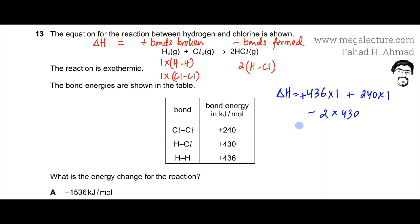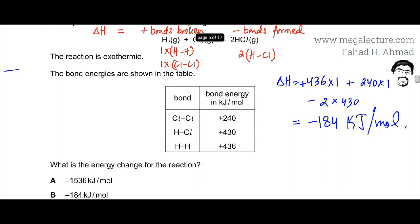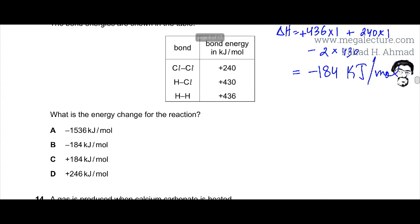Minus 184 kJ per mole is the answer. Looking at the options, you have minus 184 there, so option B is the correct answer for this question.